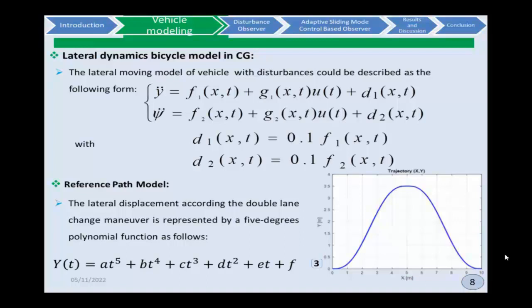The reference path model. The representation of the double line change maneuver is extracted. The lateral displacement, according to the double line change maneuver, is represented by a 5-degree polynomial function by this equation.